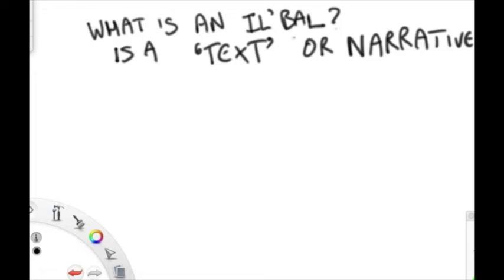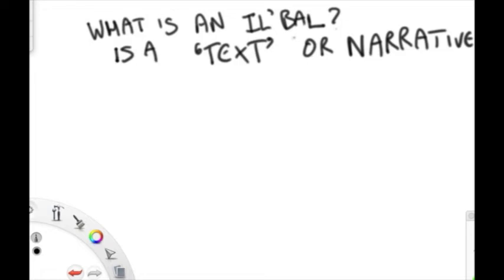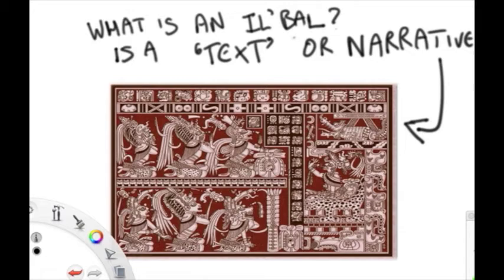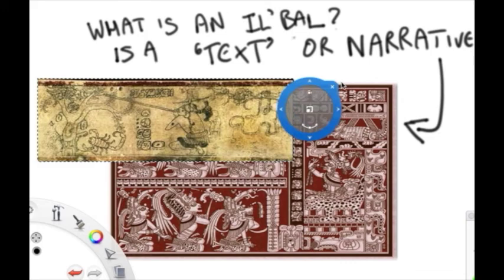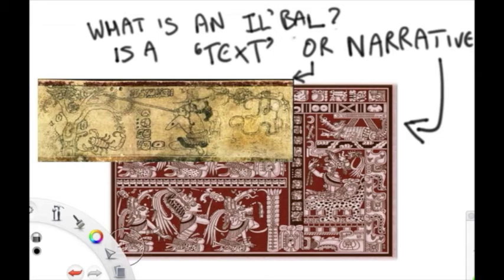It's called the Popol Vuh. The lords of Quiché could consult it if they wanted to understand particular events and place them in their proper context. They could look at the details to understand specific events in depth. If they wanted to see the cosmic significance of whatever it was they needed to understand, they'd place it in the context of a performance of the entire work. That's why I say text loosely interpreted, because it's about performance.